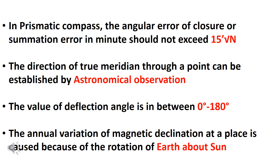The annual variation of magnetic declination at a place is caused by the rotation of the Earth around the Sun.